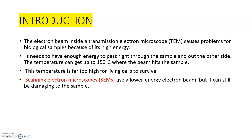The electron beam inside the transmission electron microscope may cause problems for biological samples because of its high energy — it needs enough energy to pass right through the sample and out the other side. The temperature can get up to 150 degrees Celsius when the beam hits the sample, which is too high for living cells to survive. Scanning electron microscopes use a lower energy electron beam, but it can still be damaging to the sample.